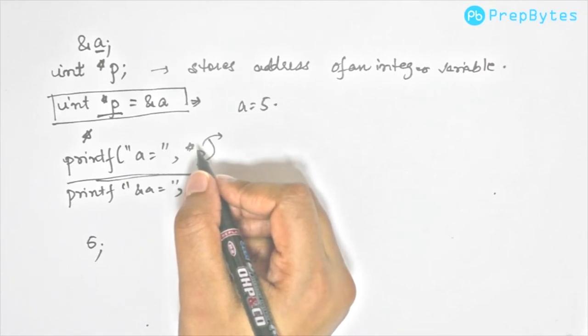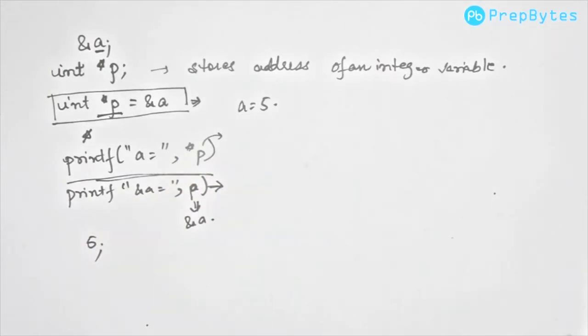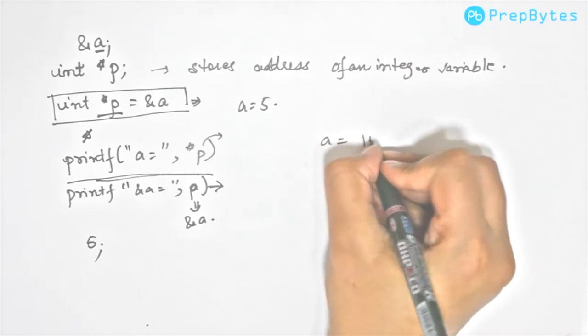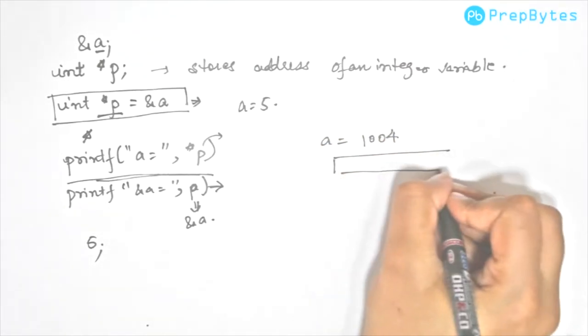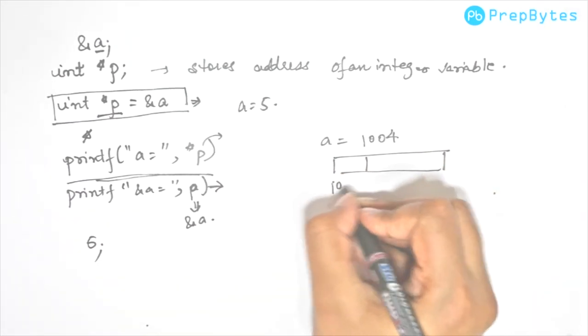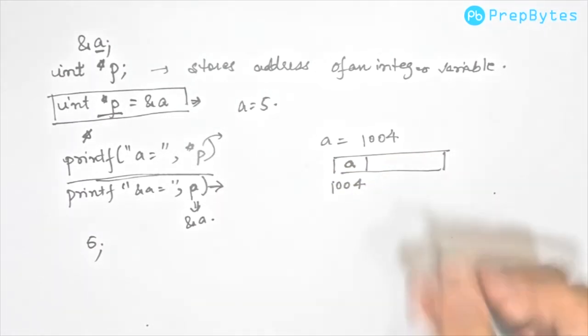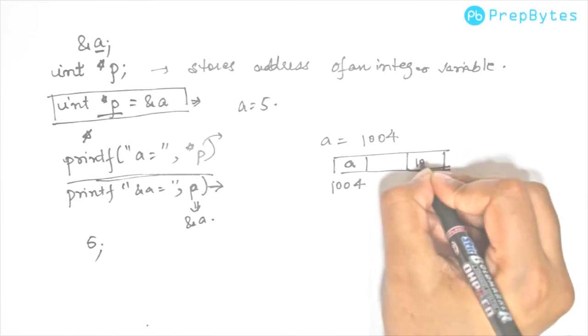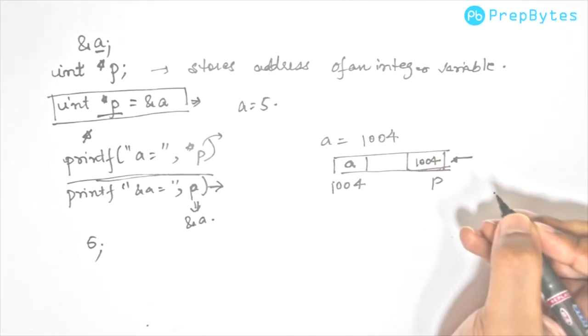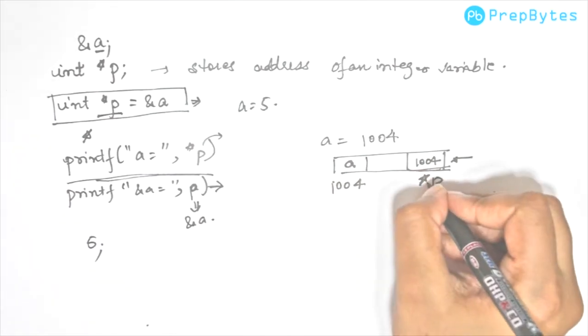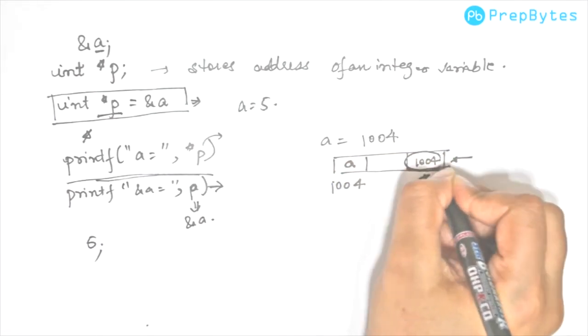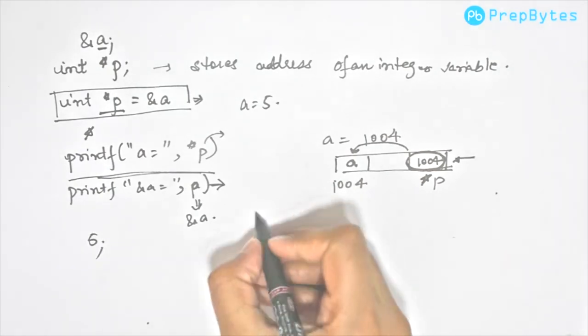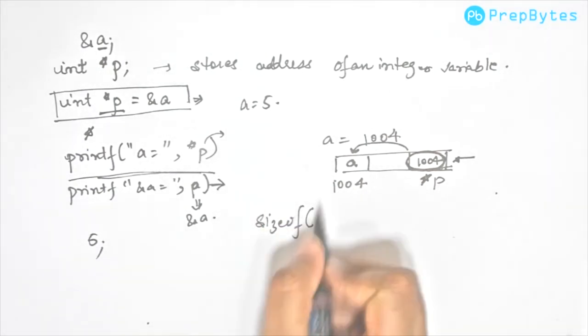Let's see what happens. We have a which has address 1004. We have this address, base address 1004, and we have a stored here. We have p somewhere in the memory. Obviously p will also occupy some memory and p will have 1004 as its value. When we do star p, then it accesses the value that is stored at address 1004, which is a.